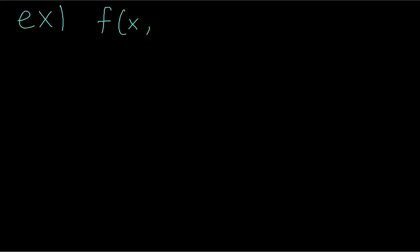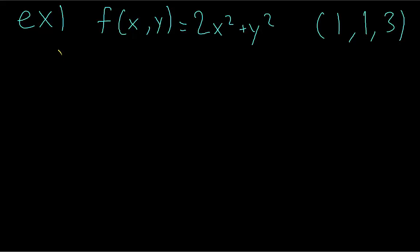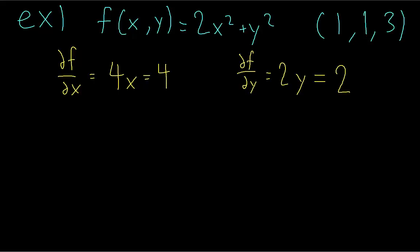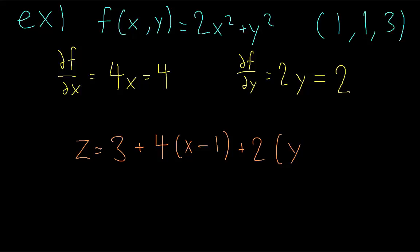Let's say we have this function and we want to find the tangent plane at the point (1, 1). First, we find the partial derivatives of the function evaluated at this point. We can then write the equation of our tangent plane: z equals the initial z value plus the partial derivative with respect to x times (x − 1), plus 2 times (y − 1), since (1, 1) is our initial point. We can group all the constants together to simplify.